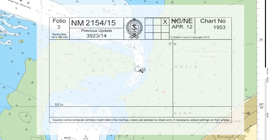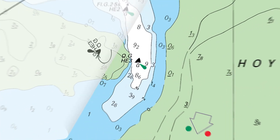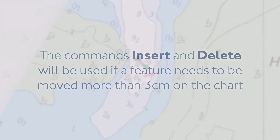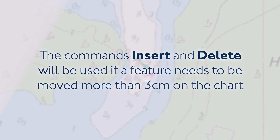Move is used for features whose characteristics or descriptions remain unchanged but are to be moved no more than three centimeters on the chart. A feature that has been moved will be shown in its new position with an arrow drawn from its existing position. Please note, the commands Insert and Delete will be used if a feature needs to be moved more than three centimeters on the chart.